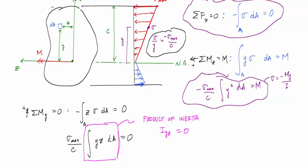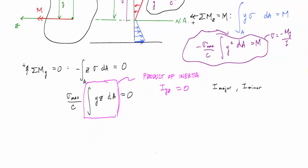The product of inertia is going to be zero as long as the y and z axes chosen for the cross section are along the principal axes of inertia. Just like there are major and minor principal stresses, there is a maximum and minimum moment of inertia for a given cross section. For an asymmetrical cross section, you need advanced techniques involving transformation equations with sines and cosines, or a Mohr's circle process, to find the major and minor principal axes of inertia.